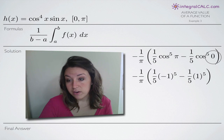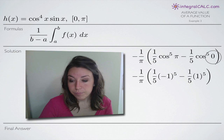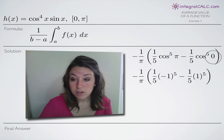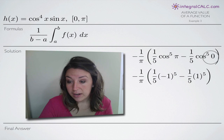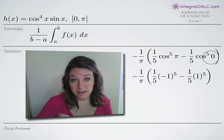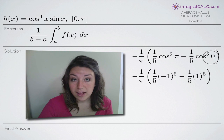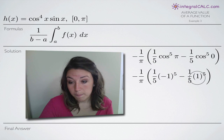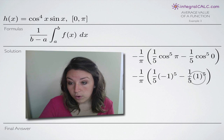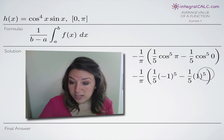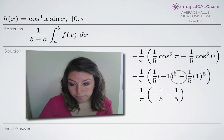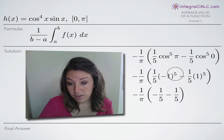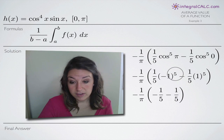For cosine of zero, again looking at the unit circle, we find the place where the angle is zero, and cosine of that angle — the x-coordinate at that point — is one. So cosine of zero is one. We keep the fifth power, and negative one to the fifth is negative one.